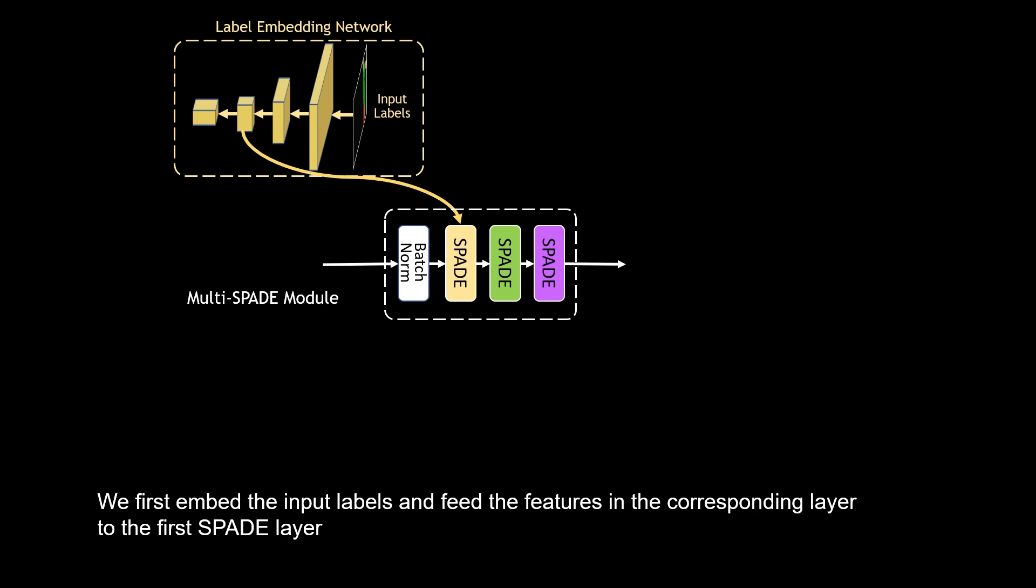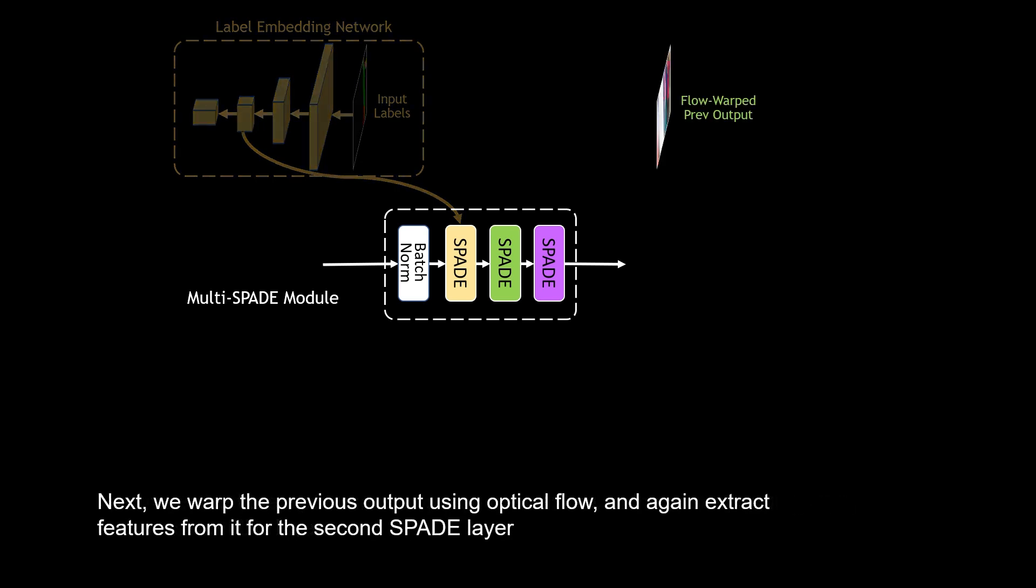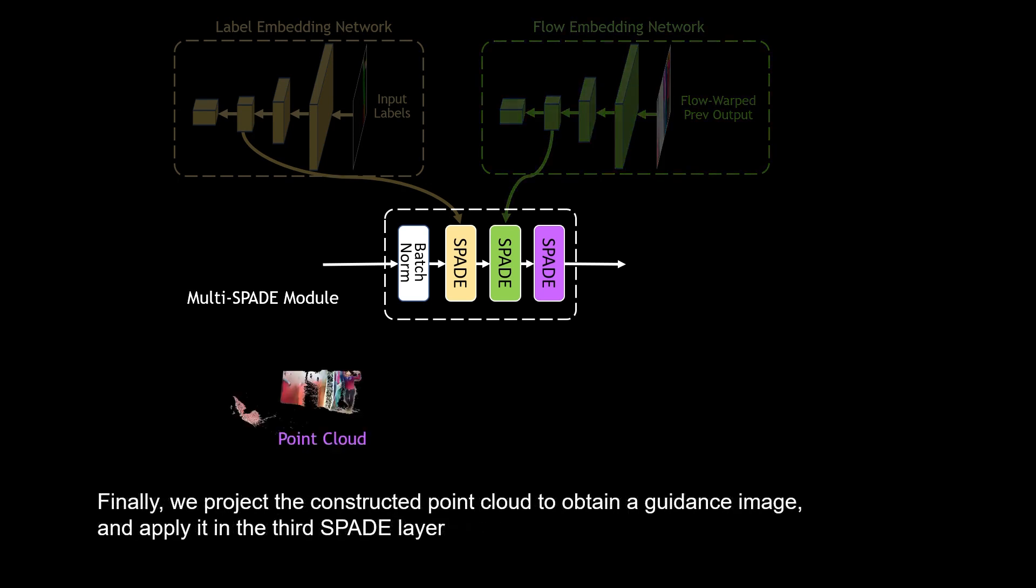Next, we warp the previous output using optical flow, and again extract features from it for the second SPADE layer. Finally, we project the constructed point cloud to obtain a guidance image, and apply it in the third SPADE layer.